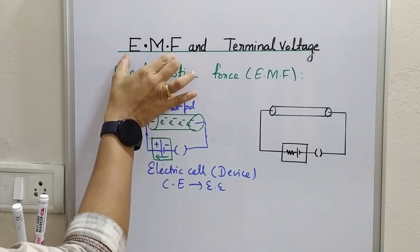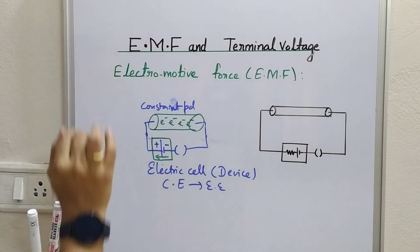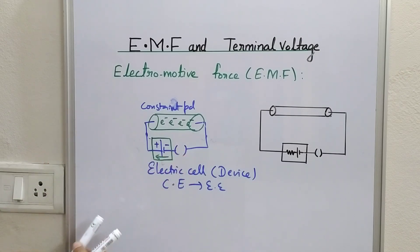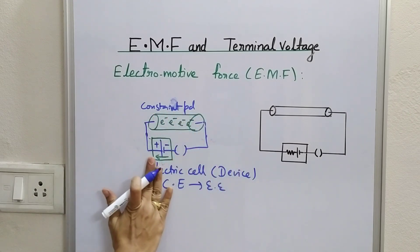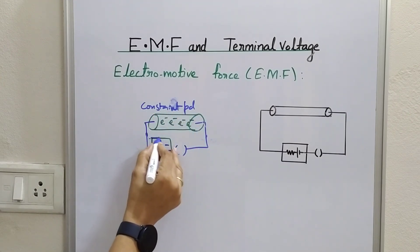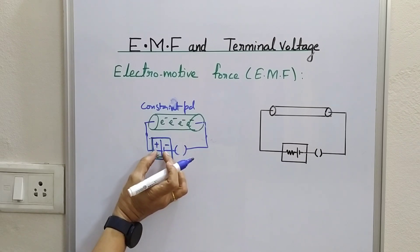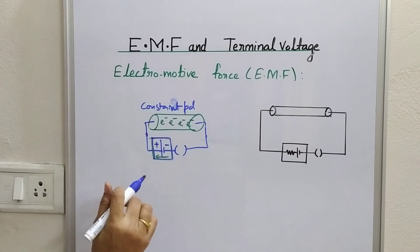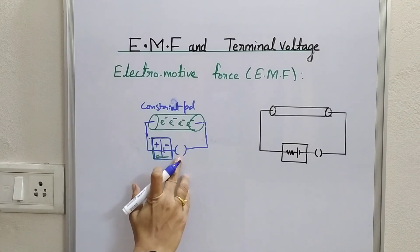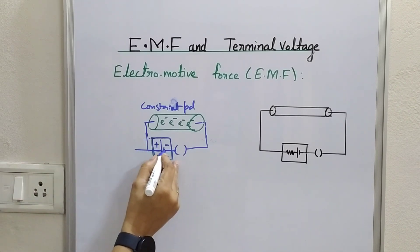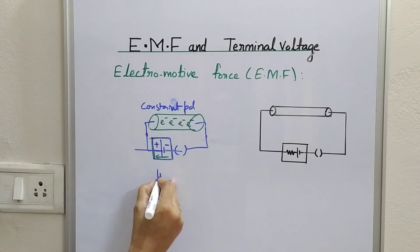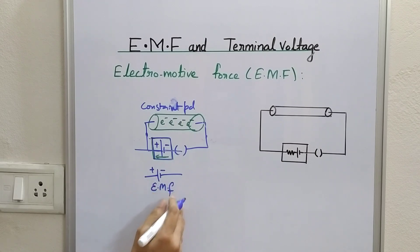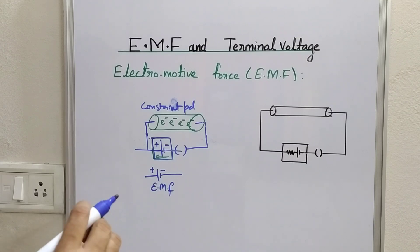To understand the meaning of electromotive force (EMF), we consider an open circuit. In an open circuit, there is no current in the external circuit. The potential difference across the terminals of the electric cell in an open circuit is called the EMF, or electromotive force, of the cell.